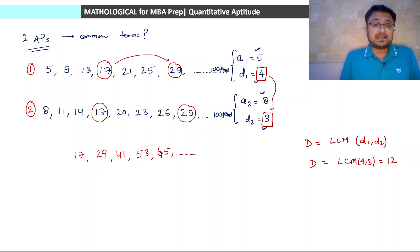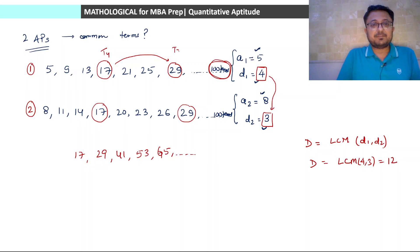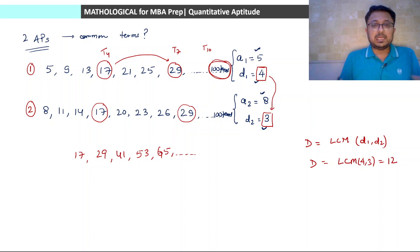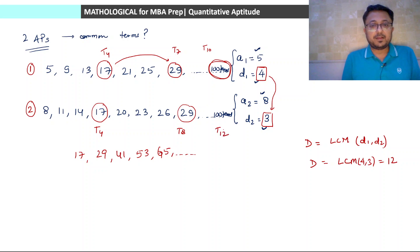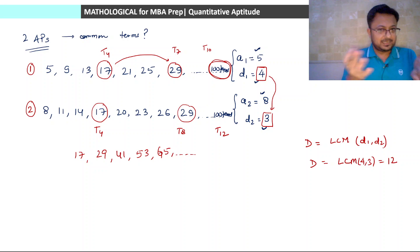How many terms will come? We need to check what the last term is. There are 100 terms total. Looking at the first series, term number 4 is common, then term number 7, then term number 10, then term number 13 and so on. In the second series, term number 4 is common, then term number 8, then 12, 16 and so on. Both series have 100 terms, so whichever series' terms finish first, that will determine the number of common terms.